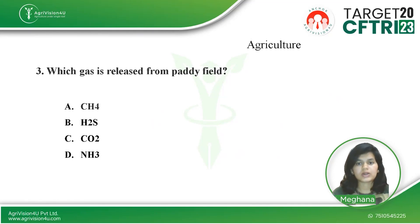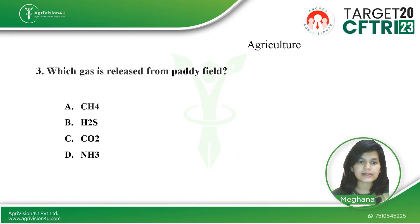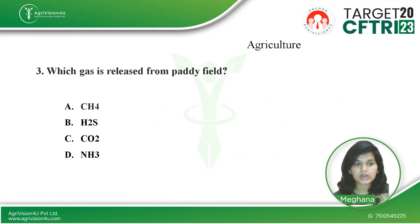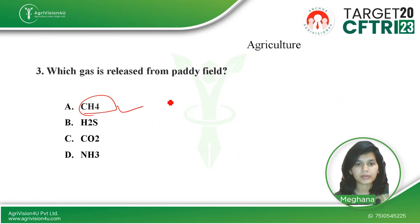The next question is from agriculture: which gas is released from the paddy field? Option A is CH4 (methane), Option B is H2S (hydrogen sulfide), Option C is CO2 (carbon dioxide), and Option D is ammonia. The correct answer is Option A — the gas released from the paddy field is methane (CH4).